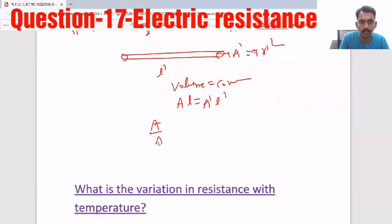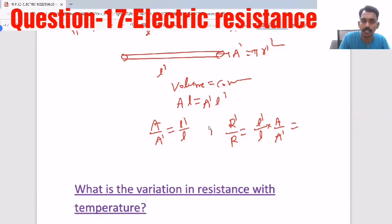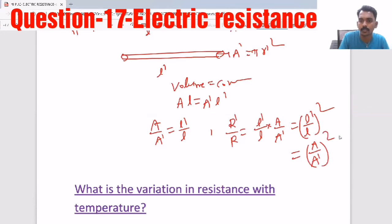From volume conservation, A/A' = L'/L. Taking initial resistance R and final resistance R', we get R'/R = (L'/L) × (A/A') = (L'/L)², since A/A' = L'/L. So R'/R = (L'/L)², or equivalently R'/R = (A/A')². This means resistance is proportional to L² and inversely proportional to A².